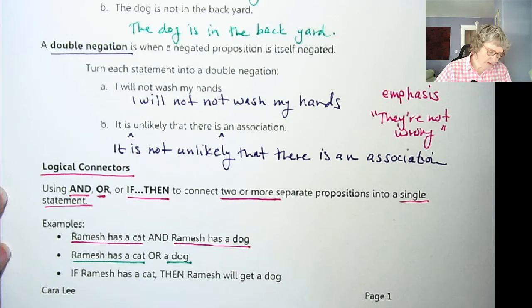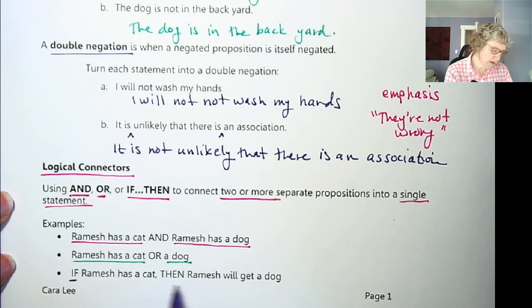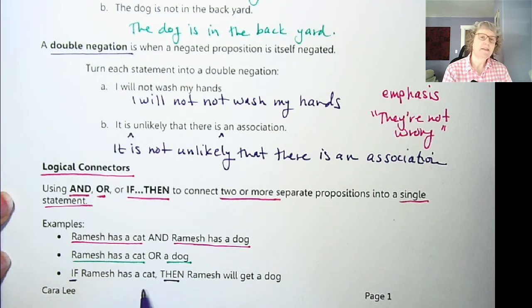So then in an if then statement, we have the if part and then the then part. So if Ramesh has a cat, then usually we're saying something will happen if the if condition is met. So if Ramesh has a cat, then Ramesh will get a dog. So that's a possible statement there.